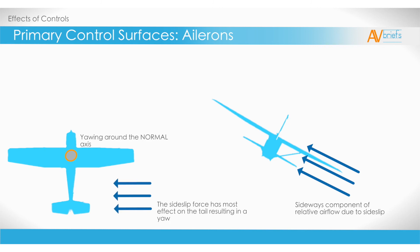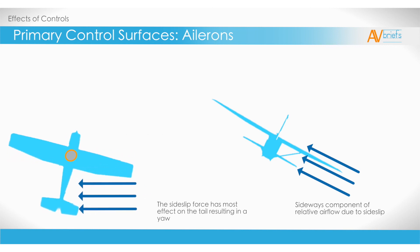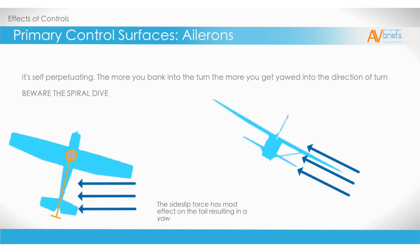This effect is self-perpetuating. In other words, the more you have, the more you get. So the more you bank into the turn, the more you get yawed into the direction of turn. This can result in a spiral dive. This effect is responsible for many accidents and needs to be treated with respect.